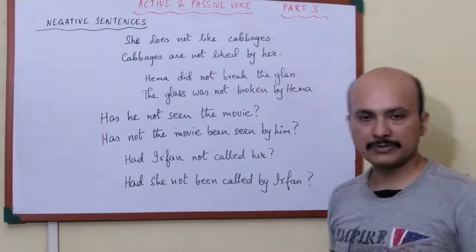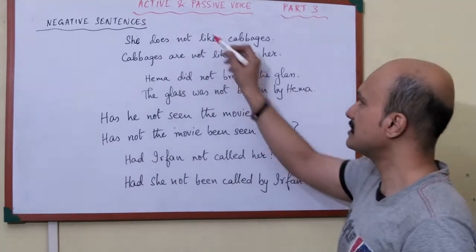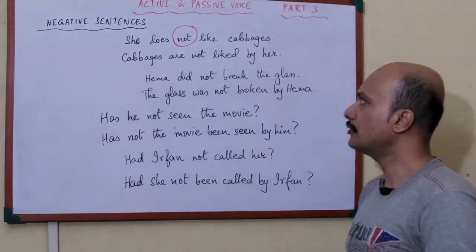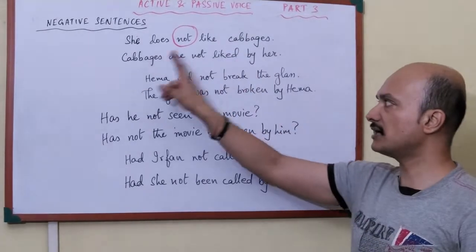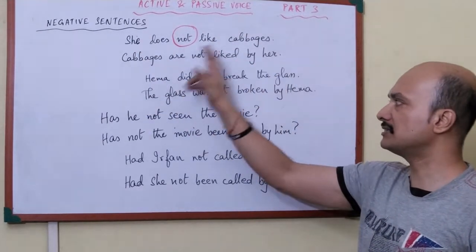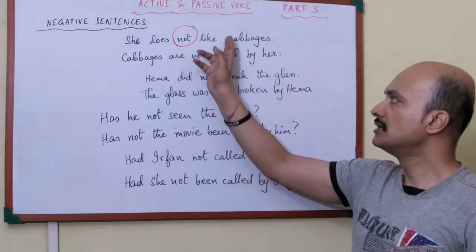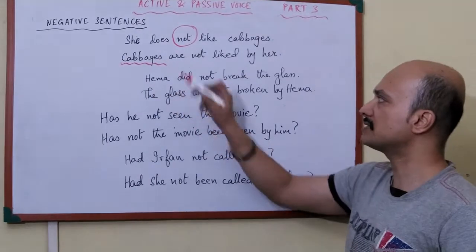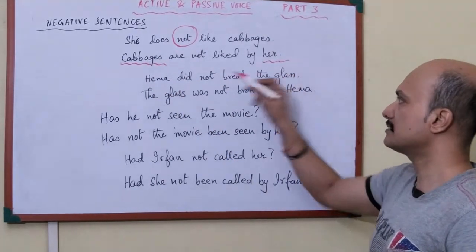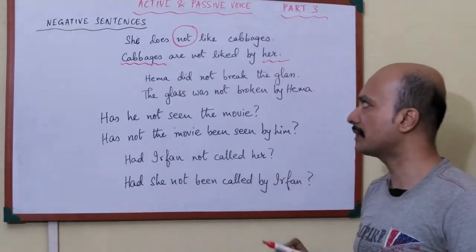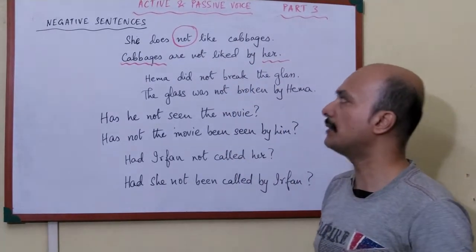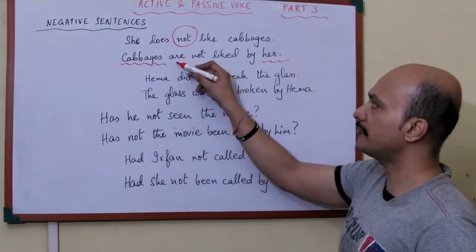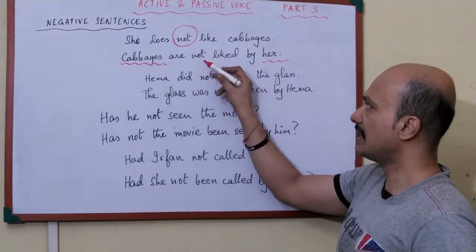First sentence: 'She does not like cabbages.' Here you have a negative — 'does not like'. 'Not' is in the middle. We write the subject and object in reverse: 'cabbages' comes into the subject position, and 'she' goes to the object as 'her'. Now 'does not like' — 'does' moves over and becomes the formation of 'are'. 'Not' is written as it is, and the main word 'like' is changed into its past participle form, which is also 'liked'.